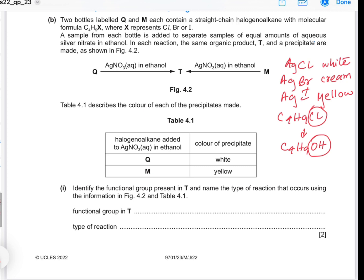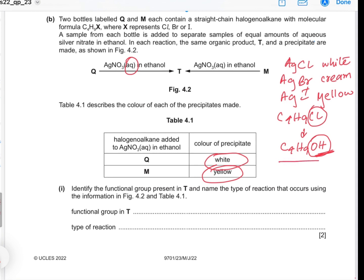With aqueous silver nitrate, you get a silver halide precipitate and also an alcohol — the halogen is replaced by a hydroxyl group in a nucleophilic substitution reaction, with the hydroxyl group coming from the aqueous silver nitrate. Q forms a white precipitate, so X in Q was chlorine. M forms a yellow precipitate, so M contained iodine. Therefore T is an alcohol, and the type of reaction is nucleophilic substitution.